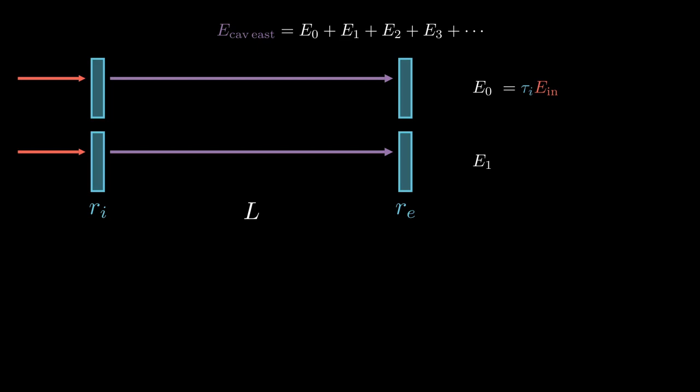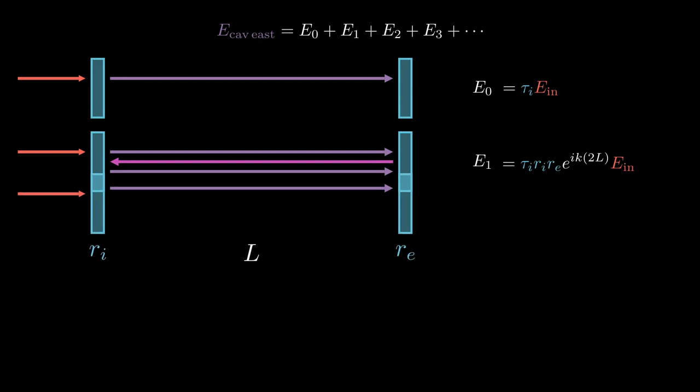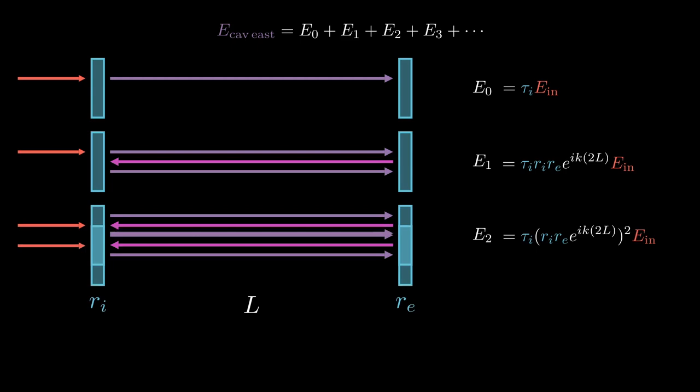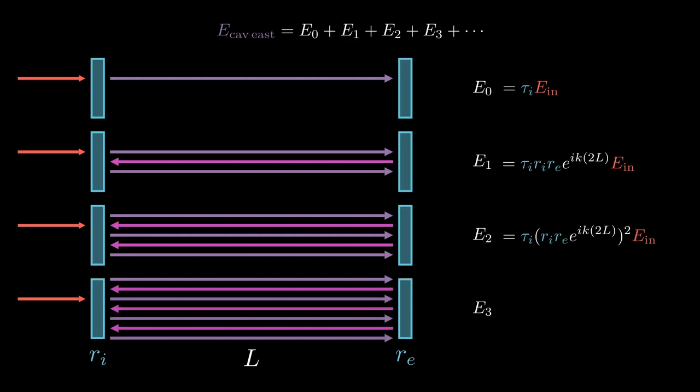The second term, E1, comes from the input beam transmitting through the input mirror, reflecting off the end mirror, reflecting again off the input mirror, and accruing the cavity phase length. The third term, E2, is the same as E1, but with two full round trips made through the cavity, instead of just one. The fourth term, E3, features three round trips, and so on.